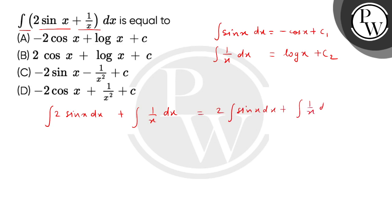So here we have minus 2 cos x plus c1 plus log x plus c2. Now c1 and c2 add together to give a common integration constant.